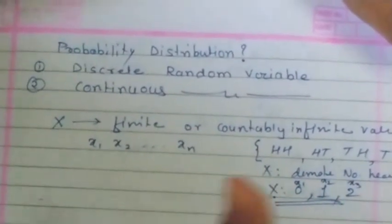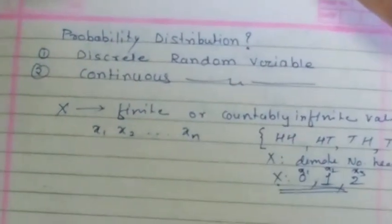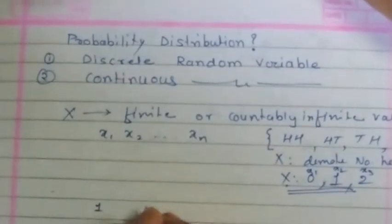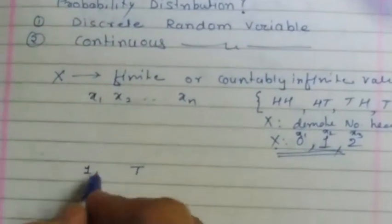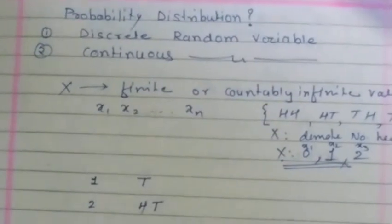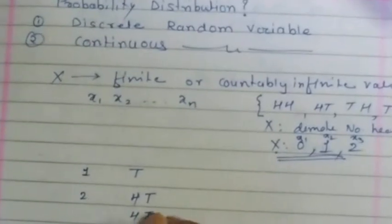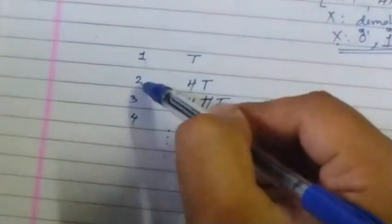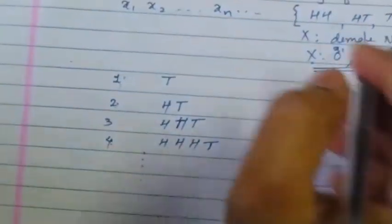Now suppose I define another experiment: I toss a coin and stop only when I get a tail. The possibilities are: tail on the first toss; H then tail; H, H then tail; and so on. I can count this sequence — 1, 2, 3, 4, 5, 6, 7 and so on — but it is infinite. This is called countably infinite. So if X takes either finite values or countably infinite values like X1, X2, Xn and so on, then such a variable is called a discrete random variable.